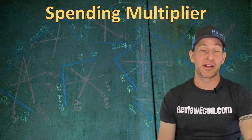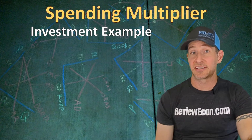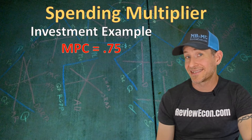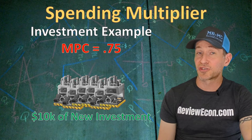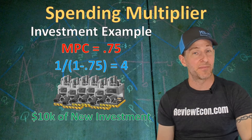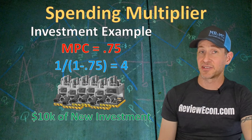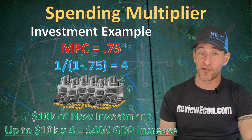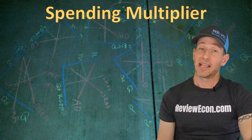We just saw how an increase in consumer spending could increase GDP. If instead we had an increase in gross investment when the marginal propensity to consume was 0.75, we can see how much a $10,000 increase in gross investment could impact the overall economy. Calculating the multiplier, we have 1 divided by (1 minus the MPC), which is 4. That tells us the $10,000 purchase of new capital equipment can increase overall national income by $40,000 at maximum.